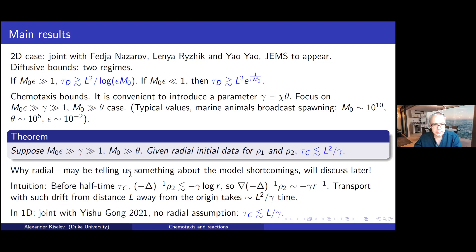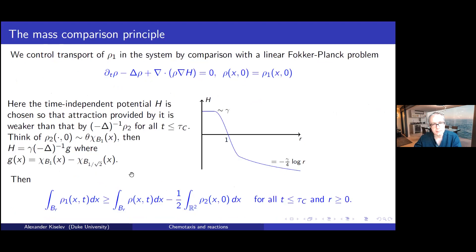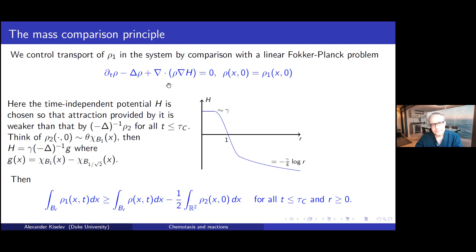Now let me describe how the proof works. The first ingredient is the mass comparison principle. To control this nonlinear problem we compare it with a linear Fokker-Planck equation of the same form as the rho_1 equation but without reaction, replacing the Laplacian inverse of rho_2 by a potential h. This potential h is chosen as the weakest attracting potential consistent with the mass of rho_2 remaining above half of its initial value.